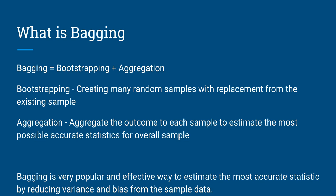Whenever you do modeling, you always have training data and test data. The sample we are talking about here is basically the training data. We are creating many samples from that training data as random samples with replacement. For example, if you have 100 observations in your training data, you can create 100 samples each having 10 observations.